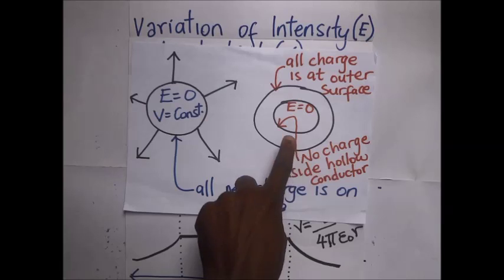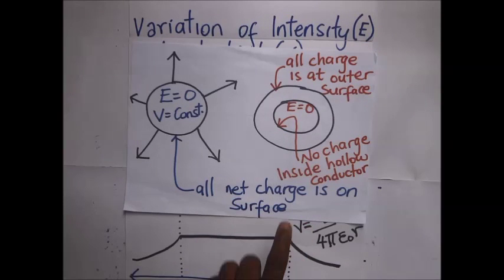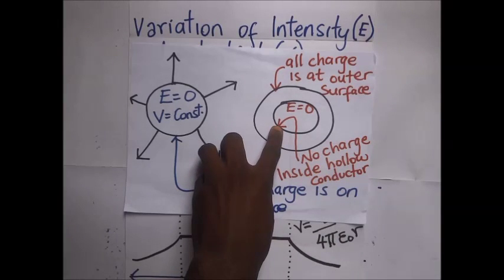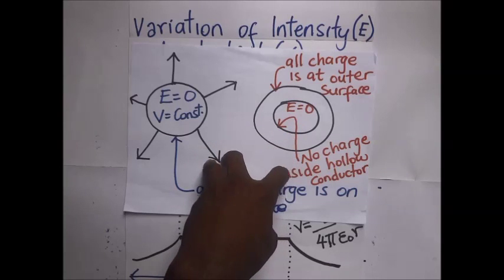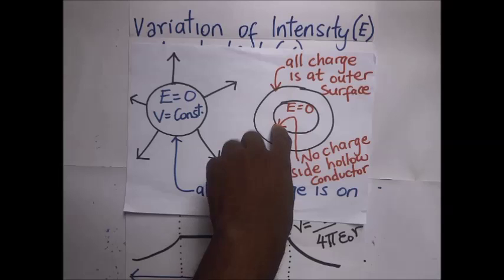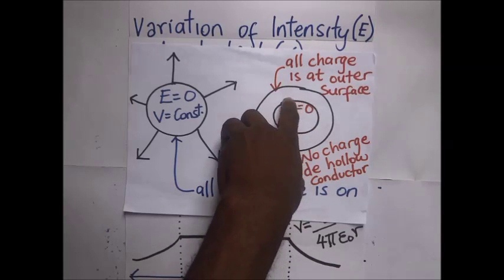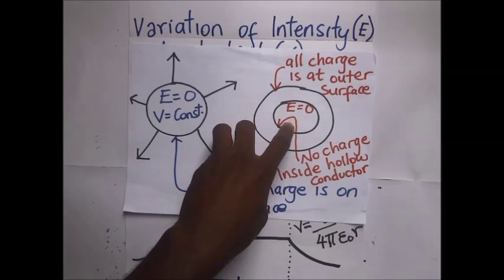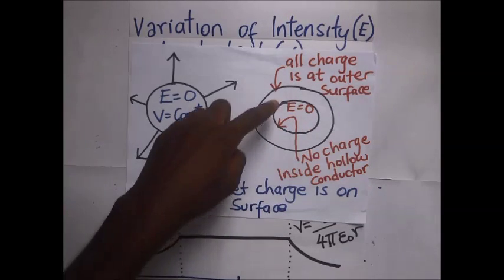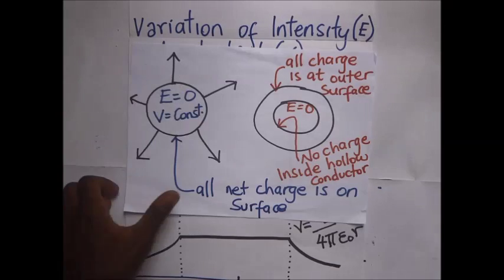For a hollow conductor, there is no charge that resides inside the hollow conductor from Faraday's experiment. No charge resides inside according to the Faraday experiment, meaning that the intensity inside the hollow conductor will be zero but the potential will be constant. All the charge is residing outside the surface.